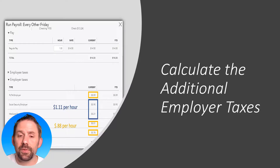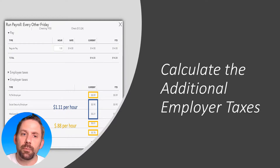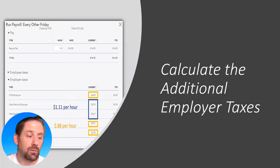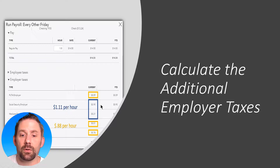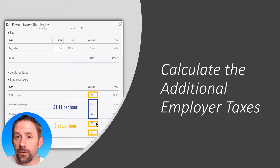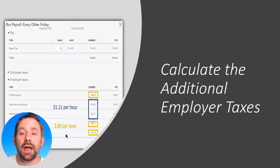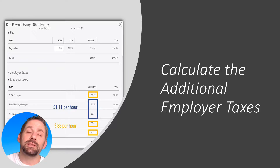The easiest way to handle this is to basically create a one-hour paycheck for that person. As you can see here — regular pay, one hour at $14.50 — you'll see how the different totals came to be. Social Security and Medicare gives us $1.11, and then utilizing FUTA, and for California our SUTA and ETT, the combined amounts give us $0.88 per hour of additional employer payroll taxes.